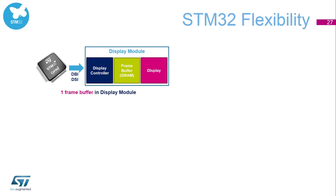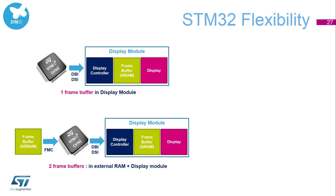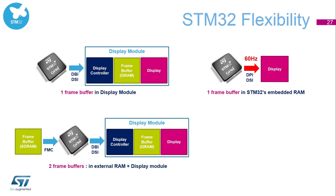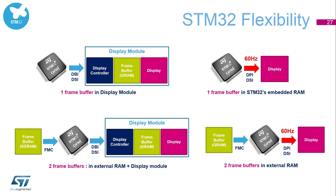Here is an overview of STM32 flexibility. The first use case is a display module with an integrated display controller and graphical memory — the MCU communicates with the display through DBI or DSI interface, so it's a one-chip STM32 plus a display module. In the second case, another frame buffer is also accessible through the FMC to avoid, for example, the tearing effect. In the third example, the STM32 communicates directly to the display through the LTDC interface — the display contains no internal controller and no memory, with only one frame buffer. And finally, the most frequent use case, since displays without a controller are cheaper: an external frame buffer for one or two frame buffers through the FMC, communicating through the DPI or DSI interface using the LTDC.